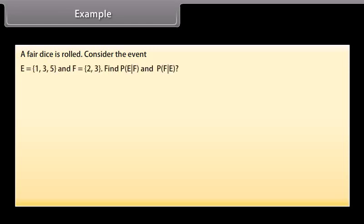Example: A fair dice is rolled. Consider the events E = {1, 3, 5} and F = {2, 3}. Find the conditional probability of E given F, and the conditional probability of F given E. Solution: Given E = {1, 3, 5} and F = {2, 3}.